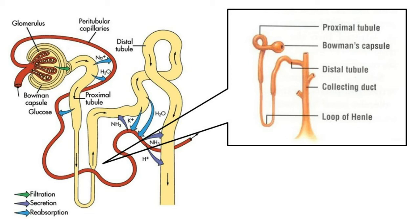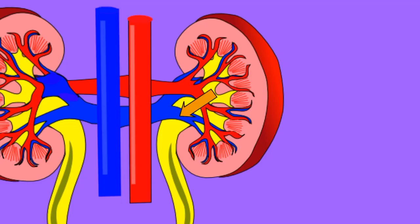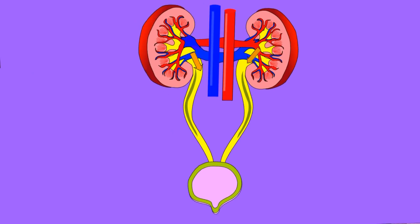Then comes Henle's loop, which looks like the letter U. Remaining water with dissolved salts and ions is absorbed here. Whatever is left is urine. Urine goes into the distal convoluted tubule, then to the collecting ducts. From the kidneys, urine goes into two tubes called the ureters, and from the ureters, urine goes into the bladder.